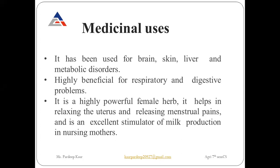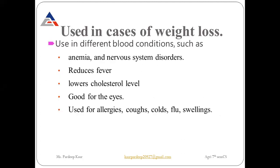Fenugreek is used as a female herb: in menstrual pains it helps to relax the uterus, and it also acts as a stimulator for milk production during nursing. Additionally, it helps with weight loss and is used in different blood conditions such as anemia, nervous system disorders, reducing fever, lowering cholesterol levels, good for eyes, and is used for allergies, colds, sores, and swelling.